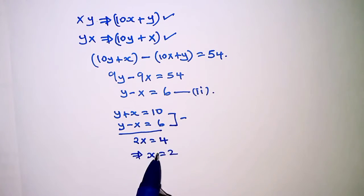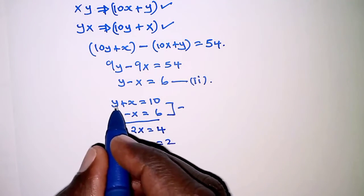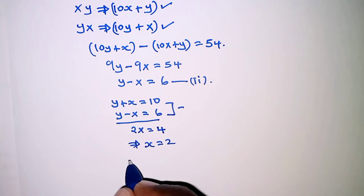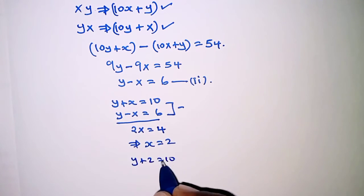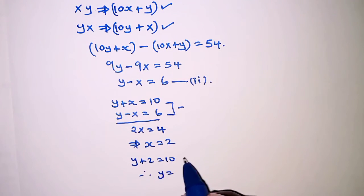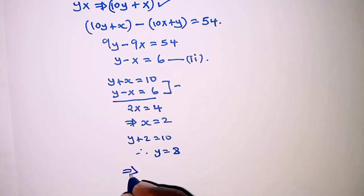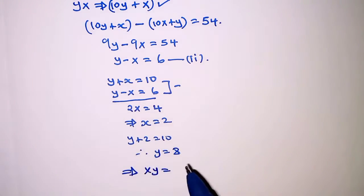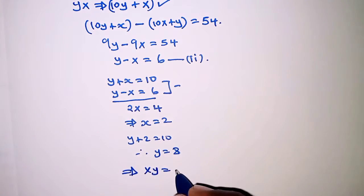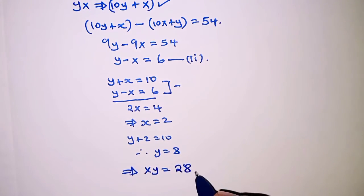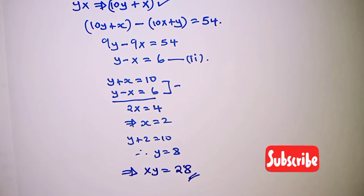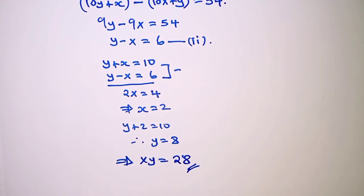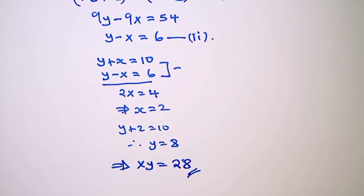From the first equation, Y plus X equals 10, substituting X equals 2 gives Y plus 2 equals 10, therefore Y equals 8. So the number XY, arranging the digits in order, is 28. Therefore the number is 28. That's it for this question — thank you for watching, hope to see you in the next video.